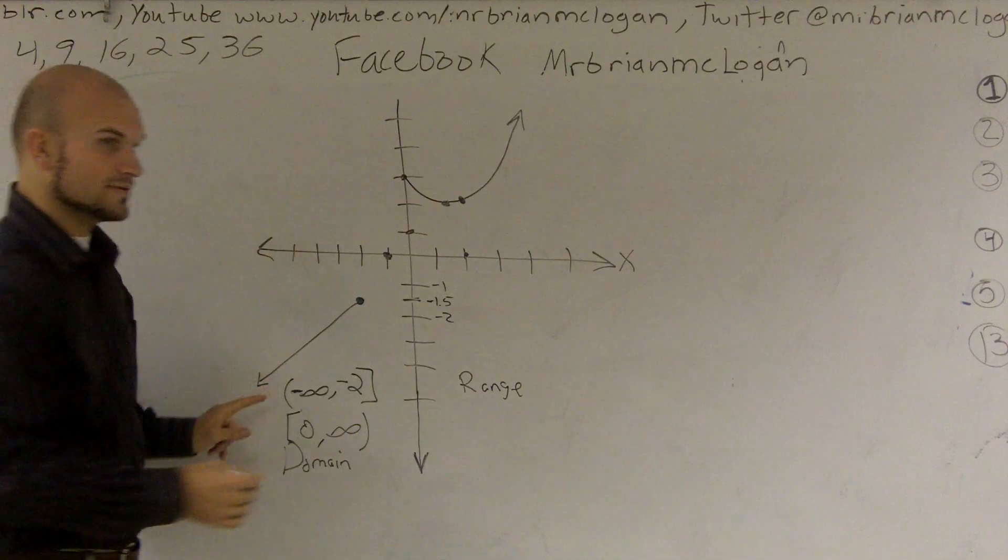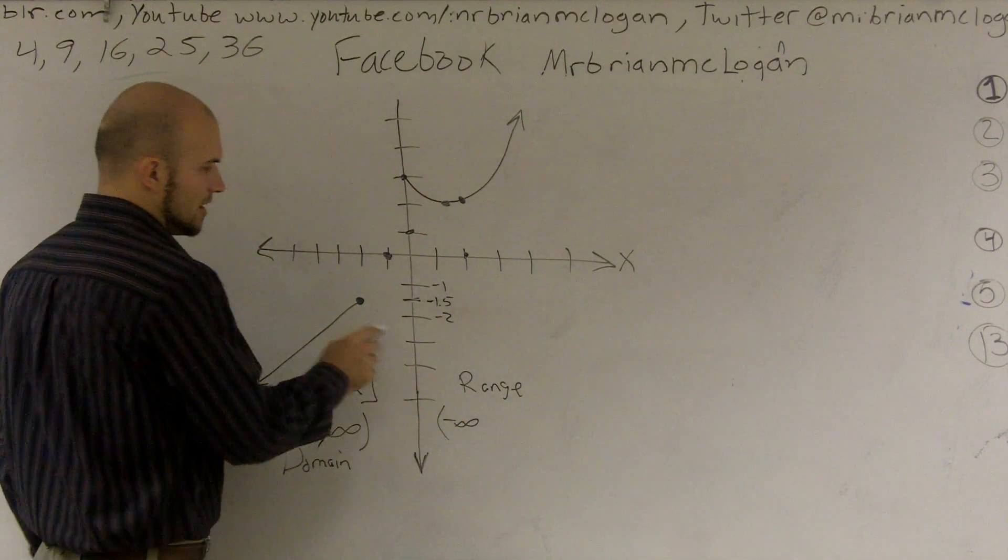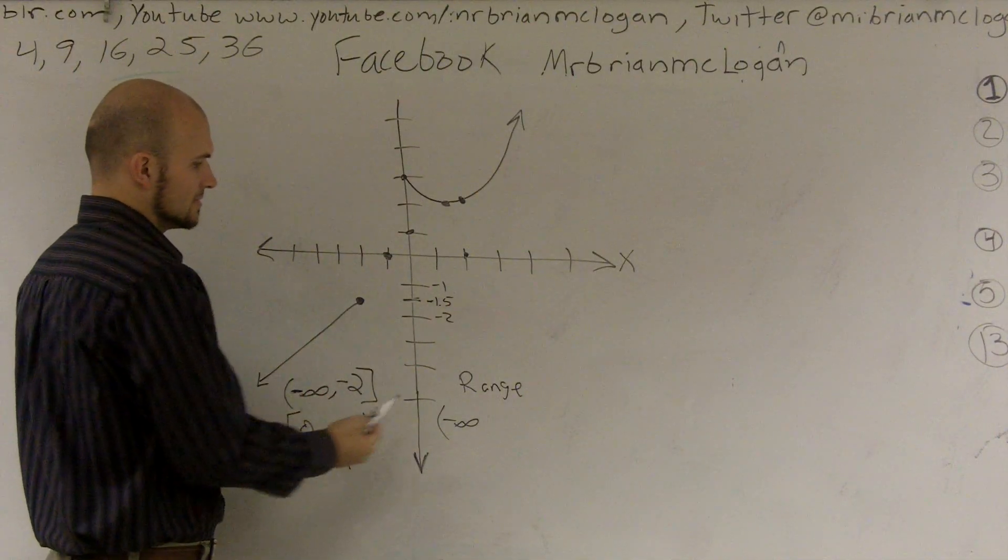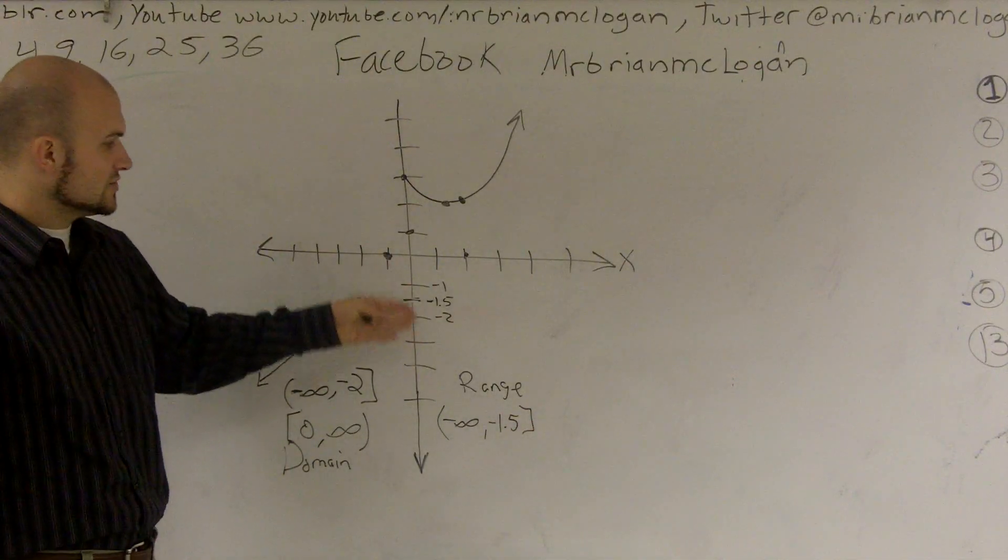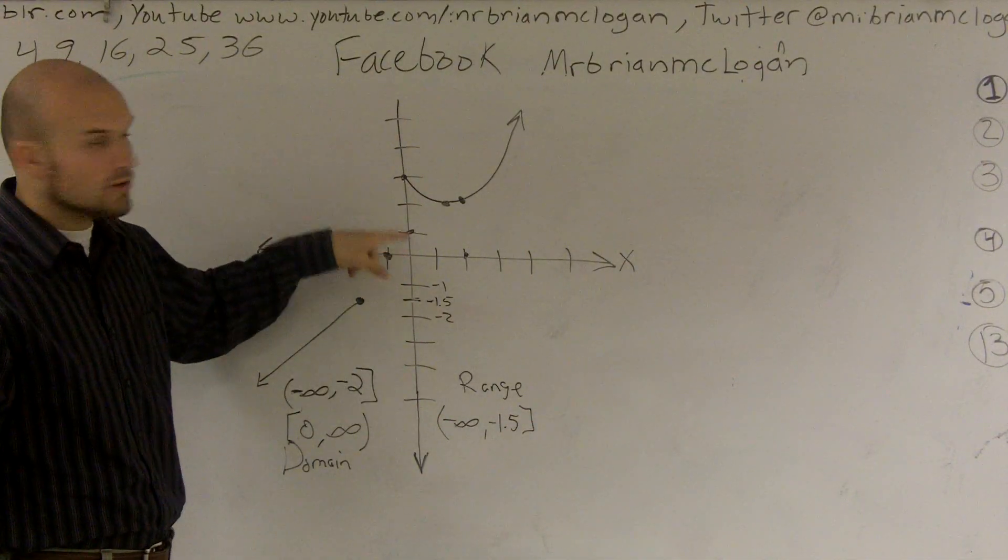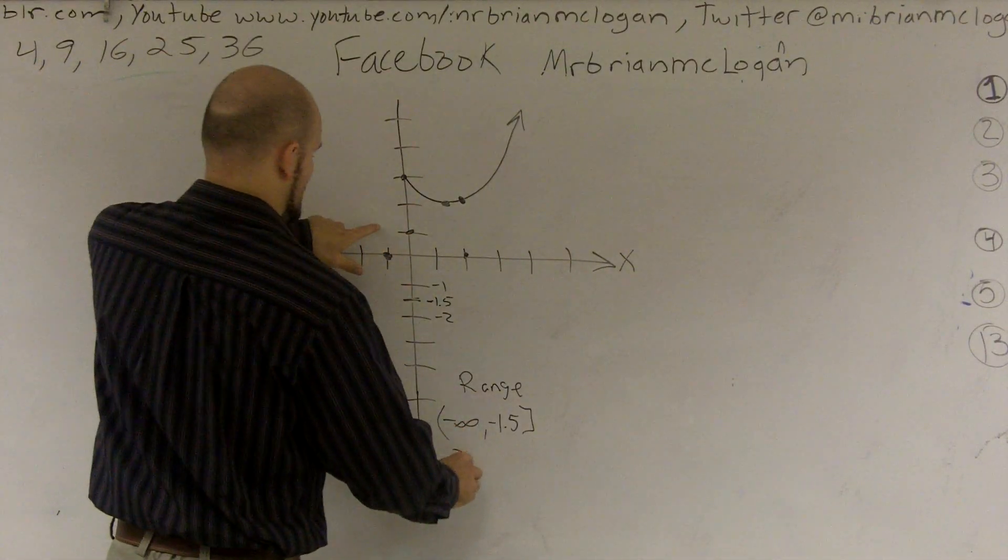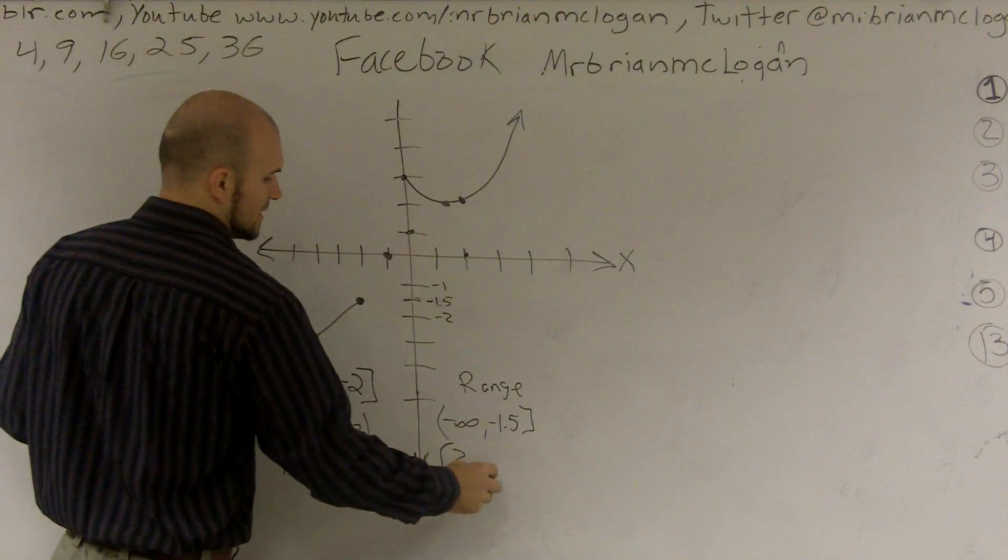So my range goes from negative infinity to how far up? How far high does this bind you up? Negative 1.5? Negative 1.5. Okay. Then it continues. There's nothing at 0 or at 1 or at negative 1. But then it starts back up again at 2 all the way up back up to infinity.